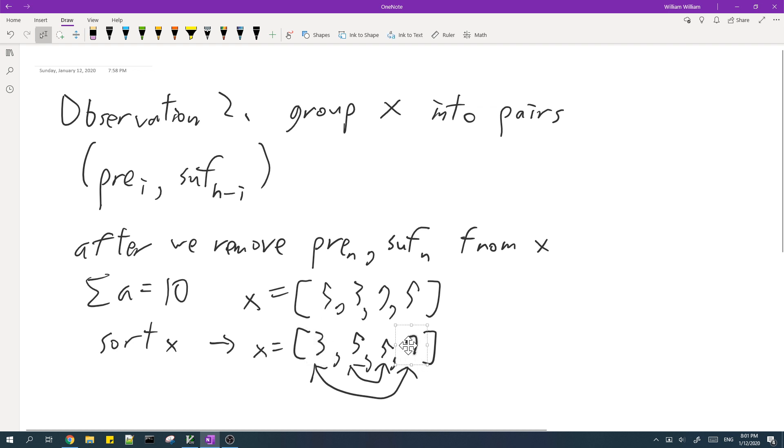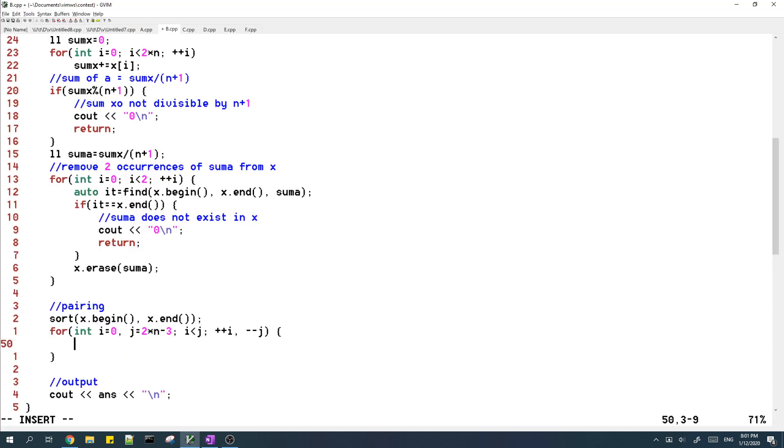And then we have to make sure that these form pairs. So if they don't add up to sum of a, then that means that the pair is invalid and we should return 0.